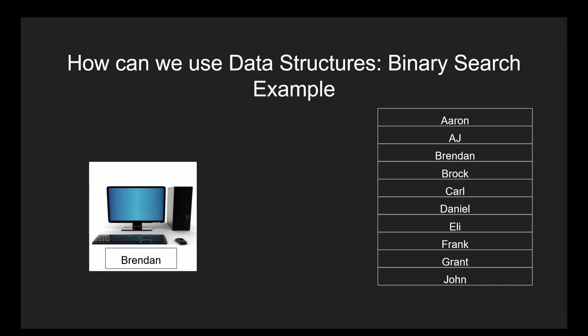If you wanted to find your name within that list using binary search, you would first look for the middle-most name — in this case, the one at the fourth index. Just a quick aside: since there is no true middle, the computer automatically uses the next one down as the middle value. Once you find your middle value, you first check to see if the name you are searching for is at the index you have chosen. If it is, you simply return that index, but 99.9% of the time it is not.